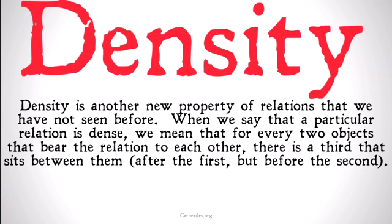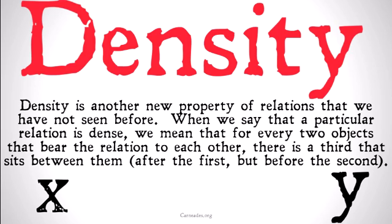Density is a new property of relations — specifically binary relations — which are things that relate two other things to each other. When we say that a particular relation is dense, we mean that for every two objects that bear that relation to each other, there's going to be a third that sits between them, after the first but before the second. That third object bears that relation both to the first and the opposite relation to the second.